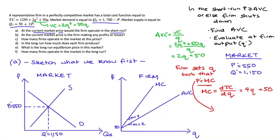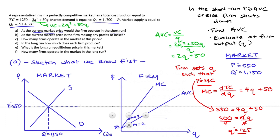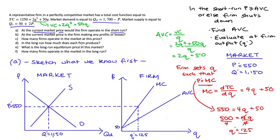Setting price equal to marginal cost: 550 equals 4Q plus 50. Taking 50 from both sides gives 500 equals 4Q. Dividing by 4 gives Q equals 125 — that's our firm equilibrium output Q star. We represent this on the diagram by drawing the price line from the market until it hits the marginal cost curve, then drawing down to get a quantity of 125. Next we substitute Q equals 125 into the AVC function: AVC equals 2 times 125 plus 50 equals 250 plus 50 equals 300.